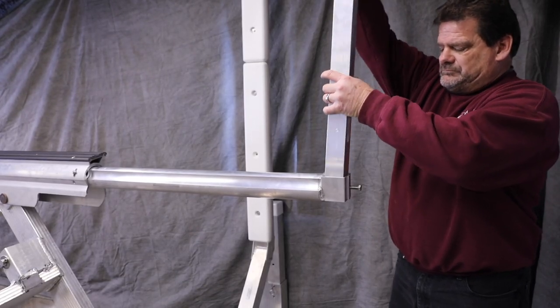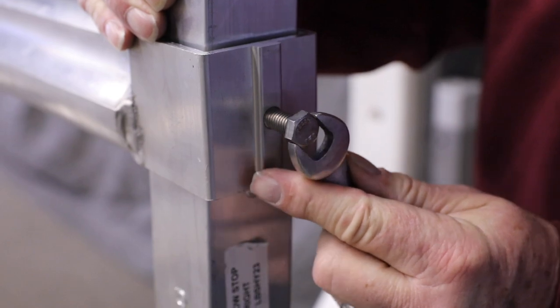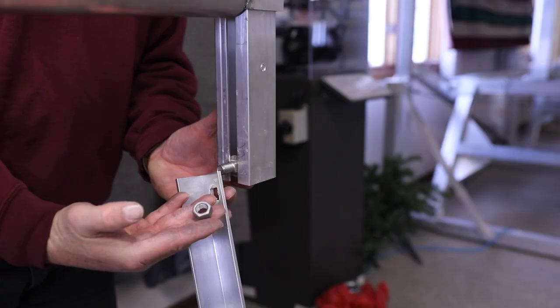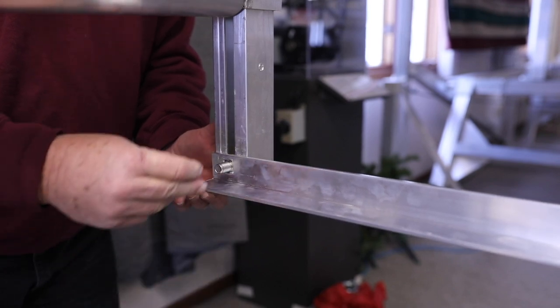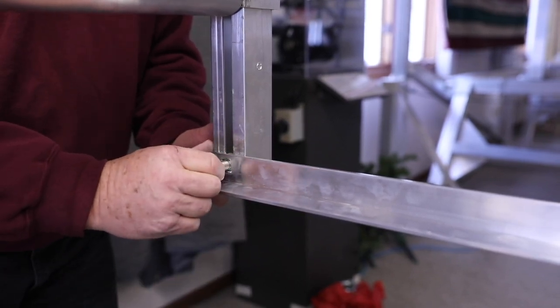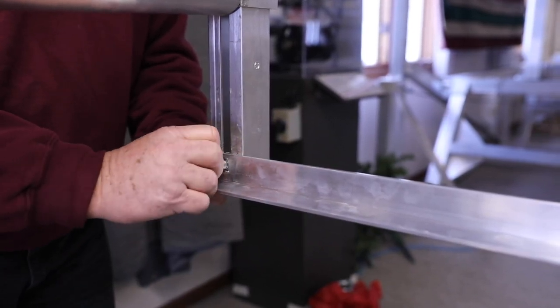Place the 60 inch upright into the bow stop and tighten it down. Slide the 1 inch carriage bolts into the base of the 60 inch upright and secure the cross angle between the two uprights with a nut and bolt.